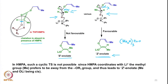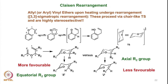This is how the effect of HMPA versus no HMPA leads to the formation of E-enolate versus Z-enolate, and that influences the geometry of the final product. Now we look at the Claisen rearrangement, which is not really dependent on enolates — it is slightly different. It does not involve enolates; instead we are dealing with allyl or aryl vinyl ethers.